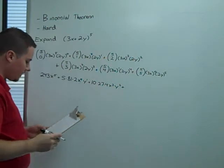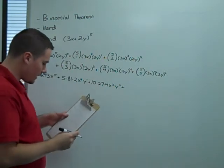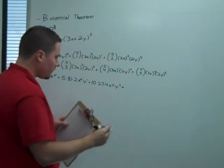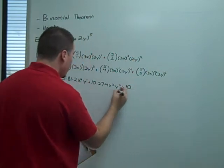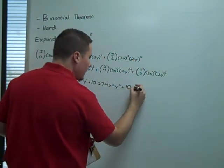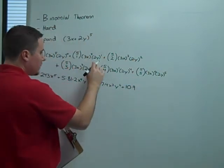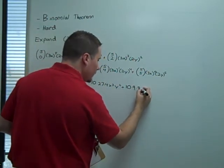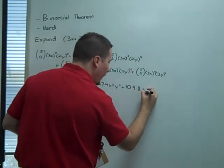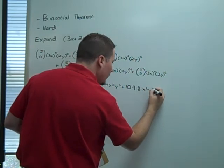All right. Here we're going to have 5 choose 3, which is, again, 10. Times 3 squared, which is 9. Times 2 cubed, which is 8. times x squared. Y cubed.